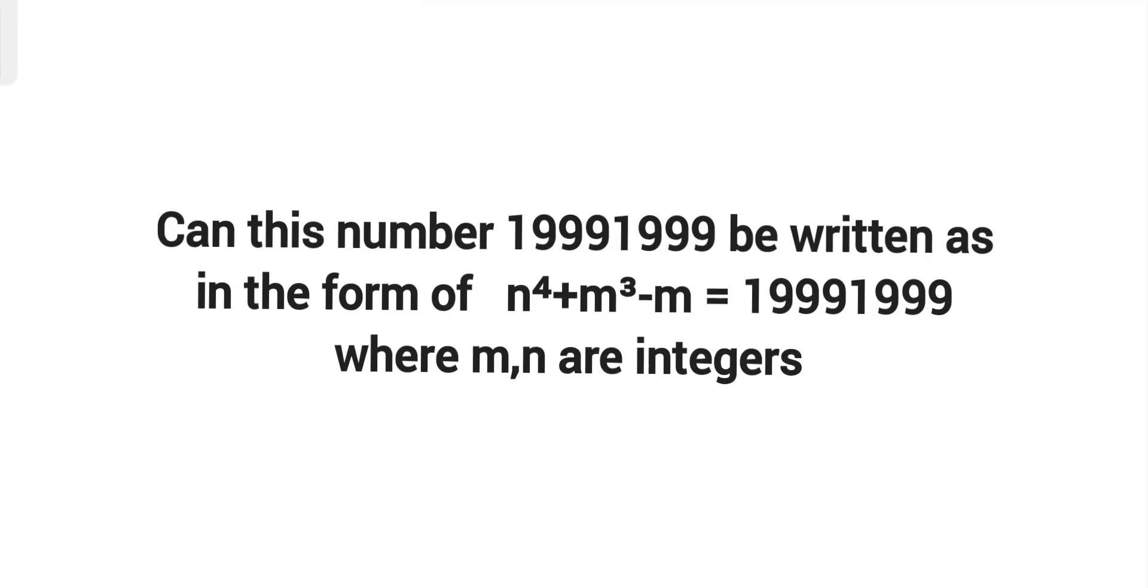Let's assume n^4 + m^3 - m equals the number for some integers. Now if we do a bit of rearrangement, we will get 19991999 - n^4 = m^3 - m.